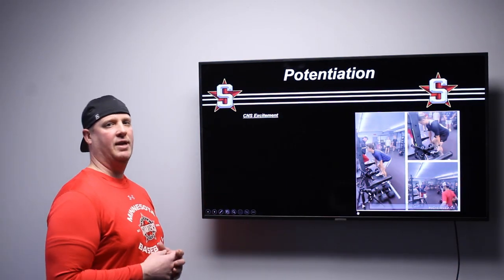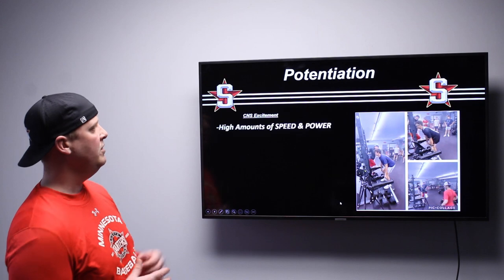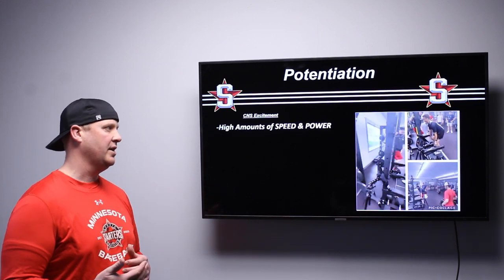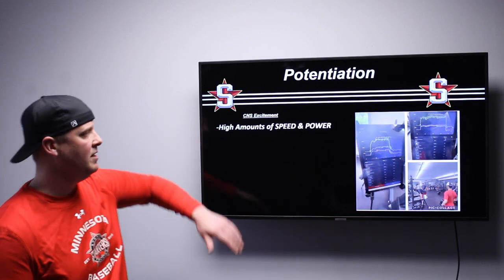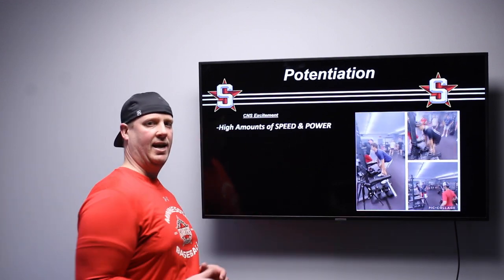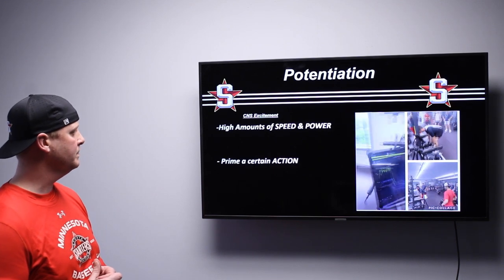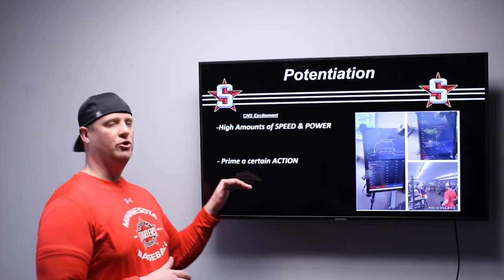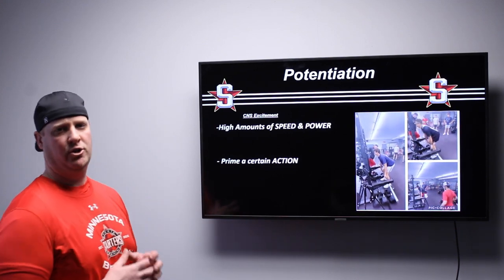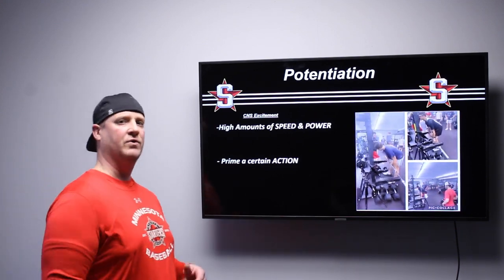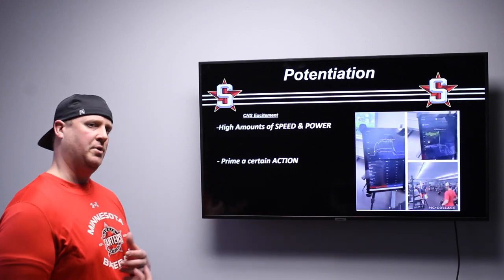There are three main ways that you can use potentiation. The first one is CNS excitement. You're trying to find high amounts of speed and power to get that athlete to achieve higher amounts of speed and power. You're going to try to prime a certain action — it could be a hip extension, so you're going to use a deadlift or a squat for the preceding action, which might be a jump.